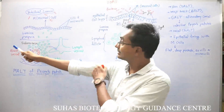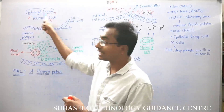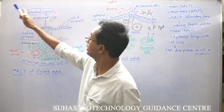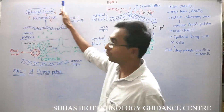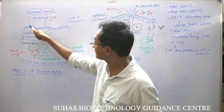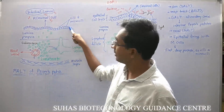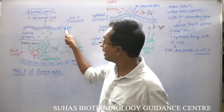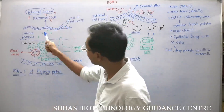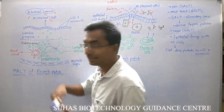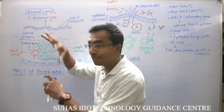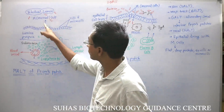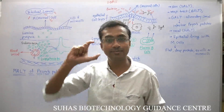This is the intestinal lumen — the area from which food is going to flow — and this is the epithelial layer of the intestine. In between these epithelial cells you can also see there are some disturbed-type of cells, and these cells are called mucosal cells or M cells.